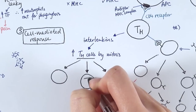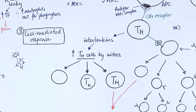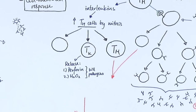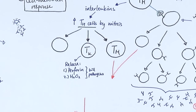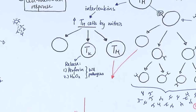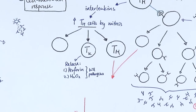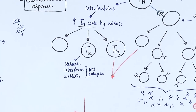T helper cells can also make T killer cells — also called cytotoxic T cells. They kill cells by releasing two different chemicals: perforin, which punches holes into the cell membrane of a pathogen, a virally infected cell, or even a cancer cell, making the cell lose its integrity so its contents come out; and hydrogen peroxide, a very toxic chemical that directly kills the cell or pathogen.